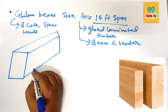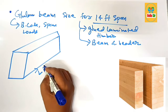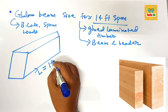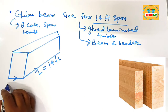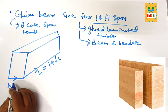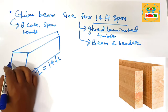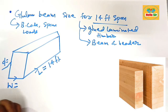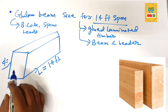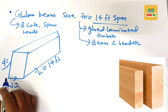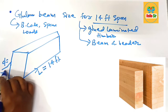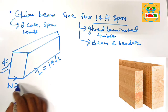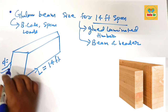This is the glulam beam. This is the length or span, which is given as 14 feet. This is the width section of the beam, and this is the depth section of the beam. So finding the size of a glulam beam means finding both the depth and the width of the beam.